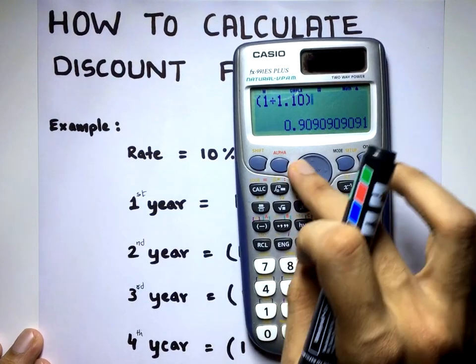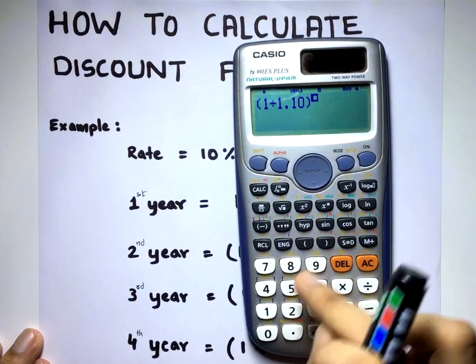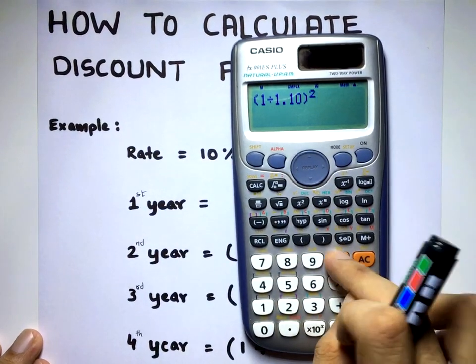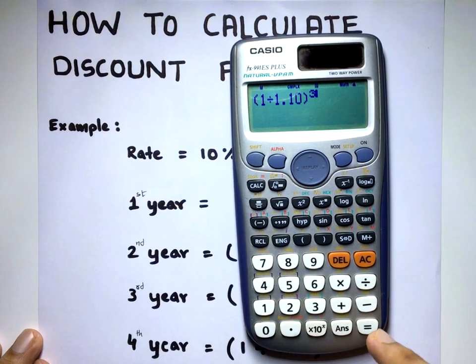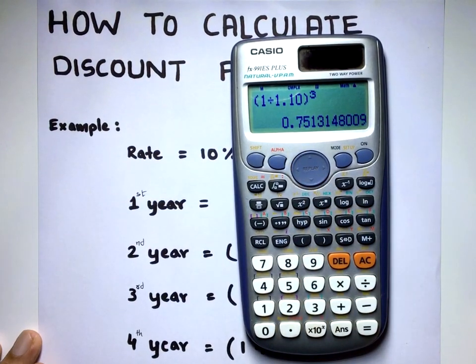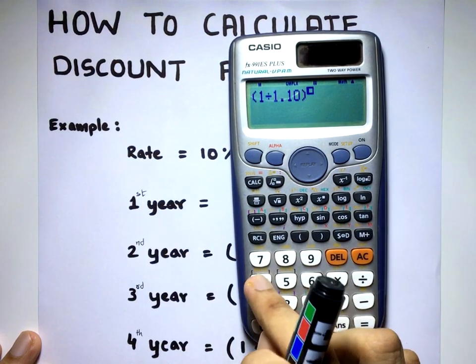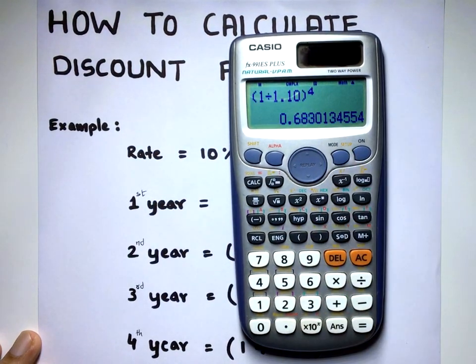Now just delete this, go back and give the power 2 to get the discount factor of the second year. Again, just delete the power and raise it to 3 for the discount factor of the third year. Delete the power for the discount factor of the fourth year.